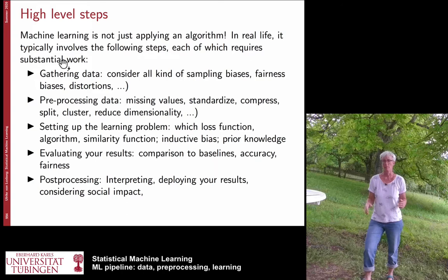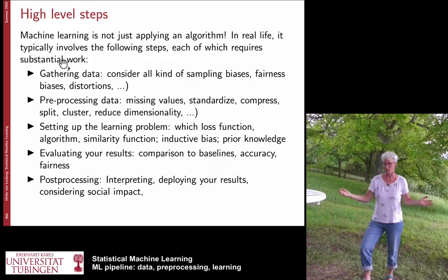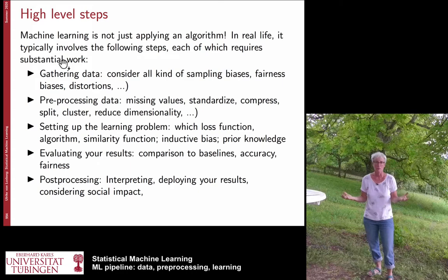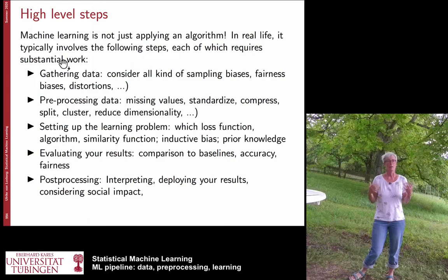The second step is pre-processing the data. This means cleaning your data — some data points may be completely wrong because devices failed, or customers gave random answers. There might be missing values. You need to standardize, possibly compress or subsample your data, use clustering to split your data set into different parts, and reduce dimensionality. All these aspects are what's typically meant by pre-processing.